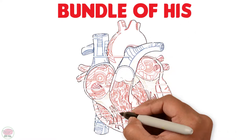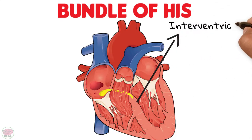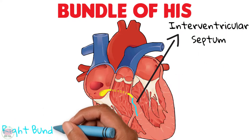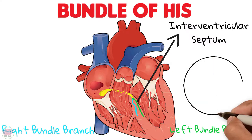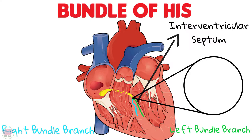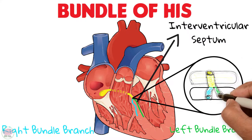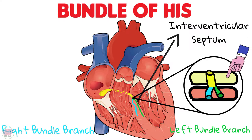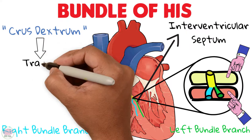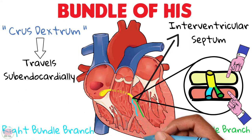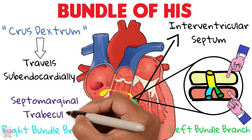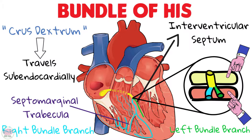The bundle of His is the continuation of the AV node. Once it passes through the right fibrous trigone and enters the interventricular septum, it branches into a right bundle branch and a left bundle branch at the union of the membranous and muscular components of the interventricular septum — think of it as a sandwich where the branching portion is covered superiorly by the membranous portion and inferiorly by the muscular portion. The right bundle branch, also known as crus dextrum, is a narrow group of fascicles that travels sub-endocardially toward the apex of the right ventricle, then enters the septomarginal trabecula — a bridge made of muscle — to reach the anterior papillary muscle, from where it divides into smaller sub-endocardial fascicles distributed to all walls of the right ventricle.